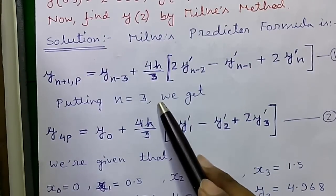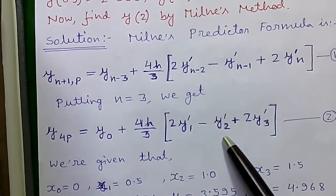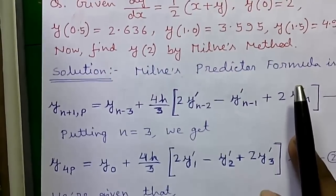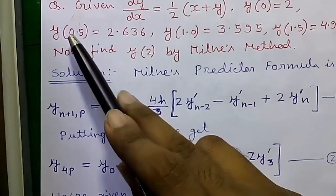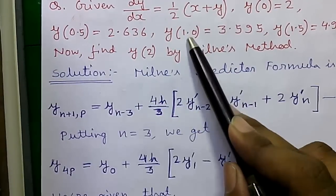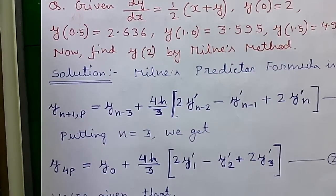Next by putting n equals 3 we will get this. We are putting n equals 3 because here we are given 3 values of y. First is for 0.5, second is for 1.0 and third is for 1.5. So n equals 3.